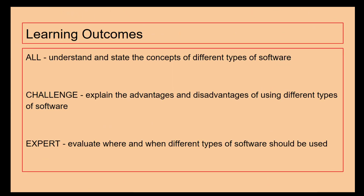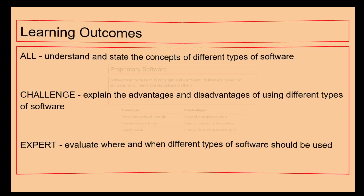Here are the learning outcomes for today's lesson. We can see that the differences between all levels — Challenger and Expert — involve looking into more detail and more depth. So if we're aiming for expert, we need to make sure that we're not just writing bullet points or single sentences; we're looking at things in paragraphs.